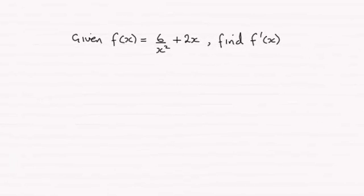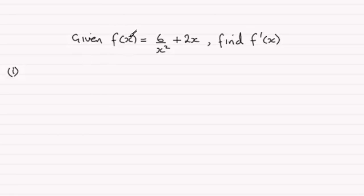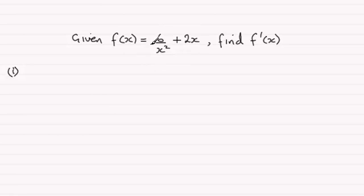Hi. So for the first part of this question, we're given that f of x equals 6 over x squared plus 2x, and asked to find f dash x, or f prime x — in other words, the first differential of this with respect to x.